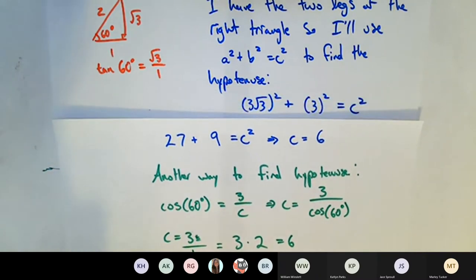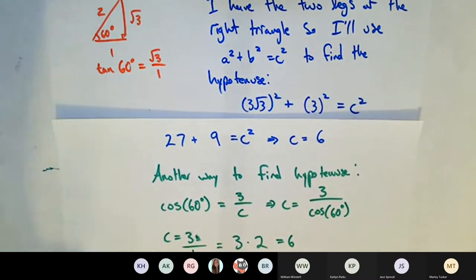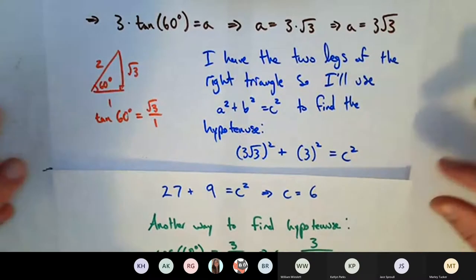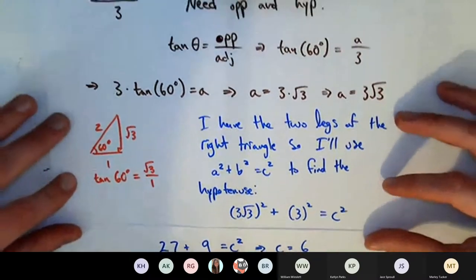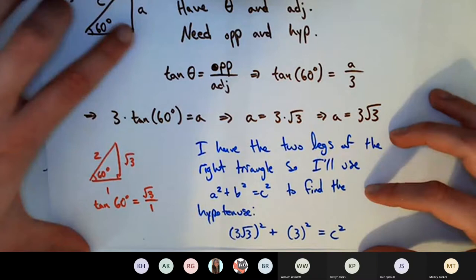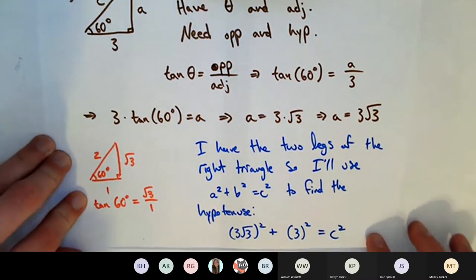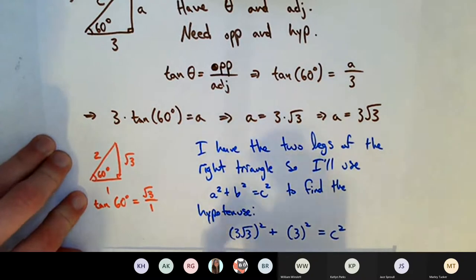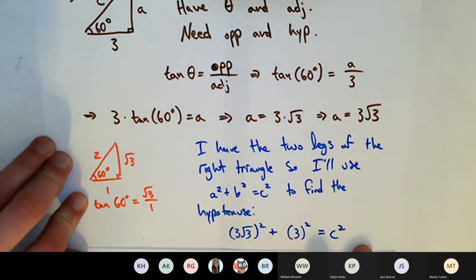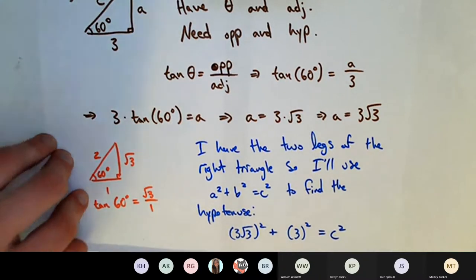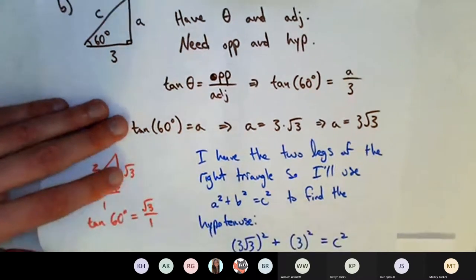Remember you can always go back and watch these videos. One last note: if you use a trig function to find one side and then use the Pythagorean theorem to find the other, make sure you set up the Pythagorean theorem correctly so the hypotenuse is on the right side and be careful with the algebra.